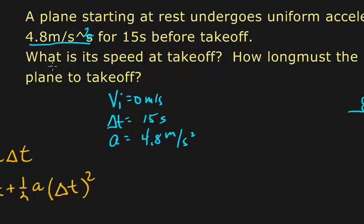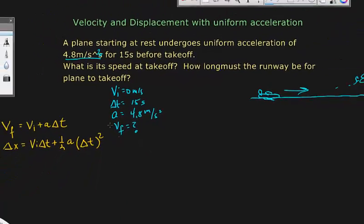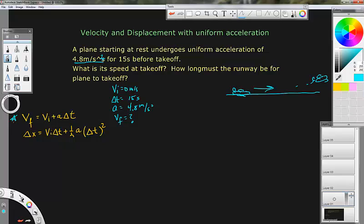And it wants to know in the first part, what is the speed at takeoff? So we want to know what the final velocity is. And we have a nifty little equation here, we'll start with vf equals vi plus a t.